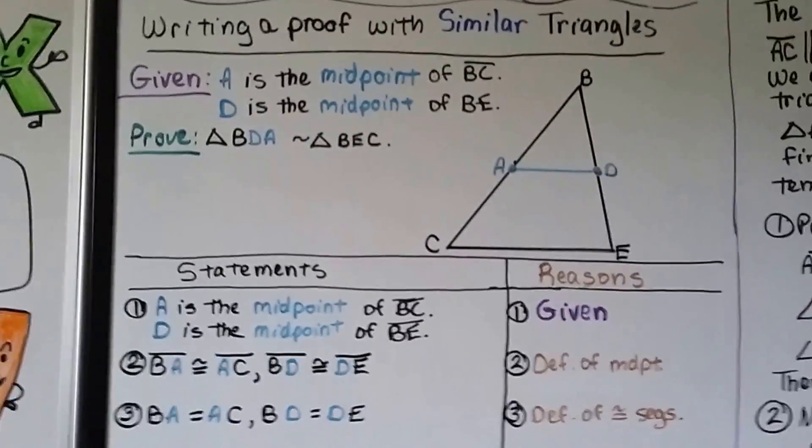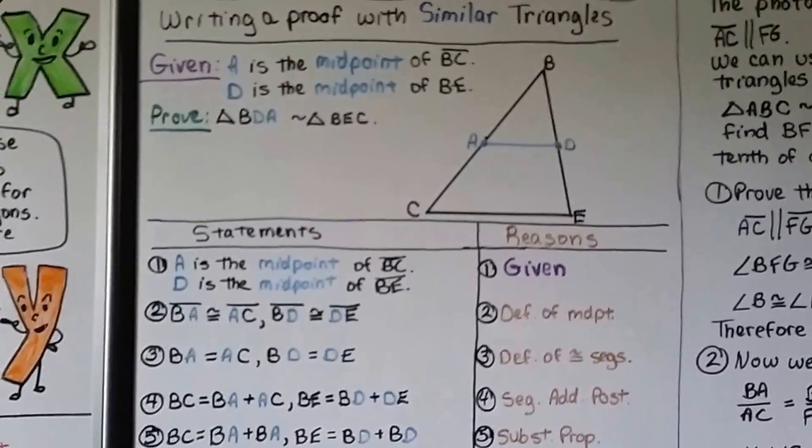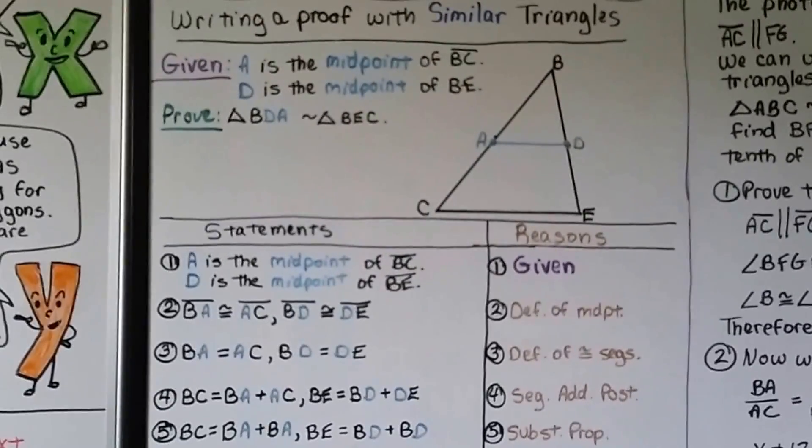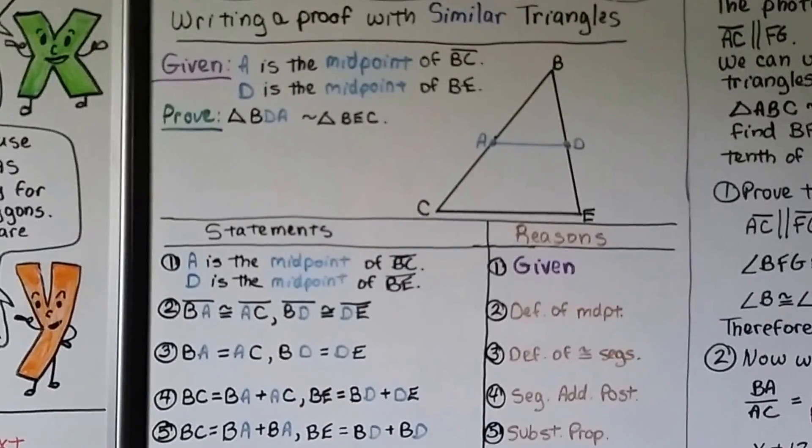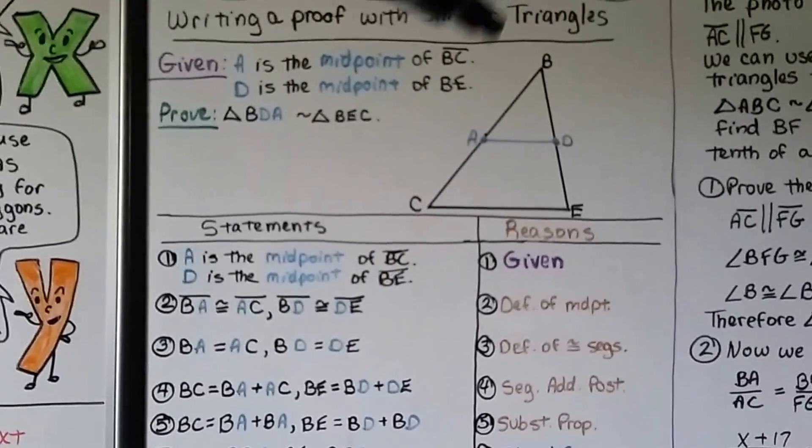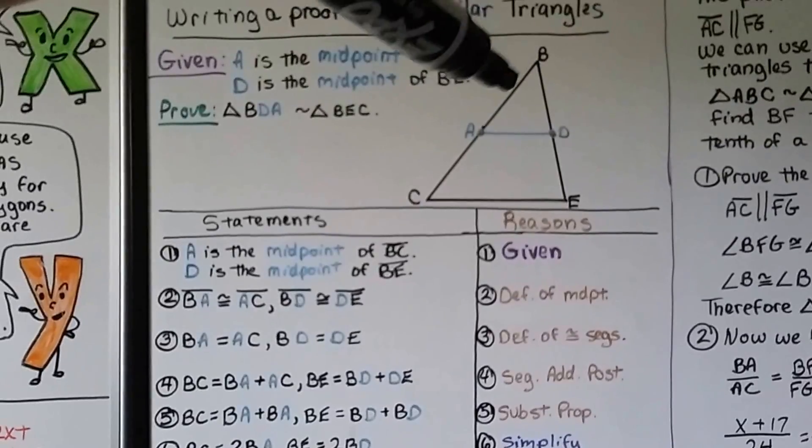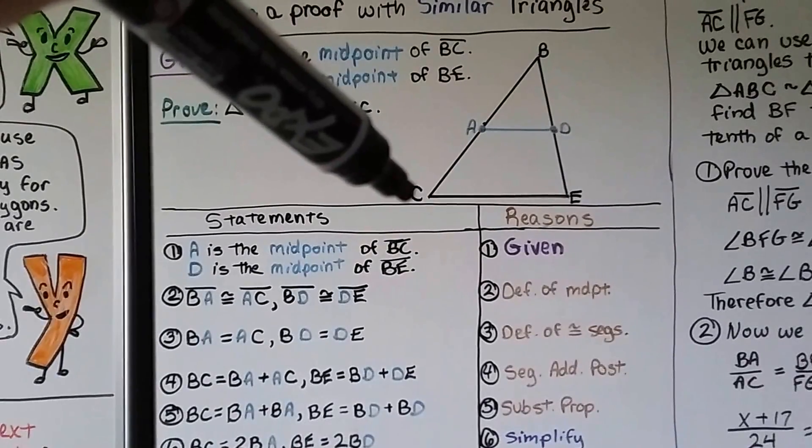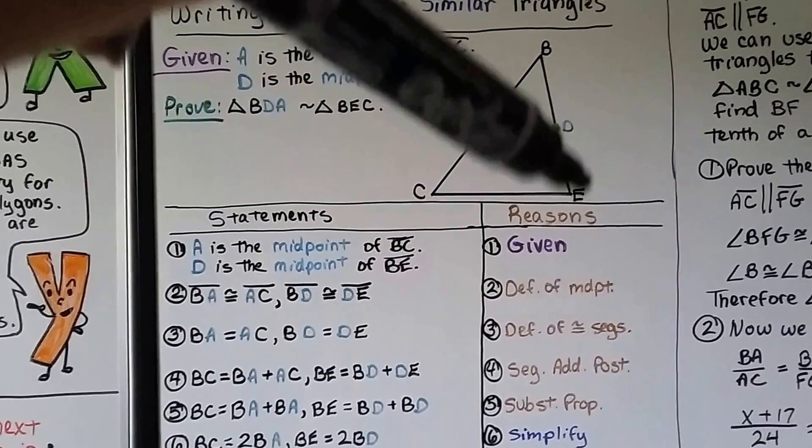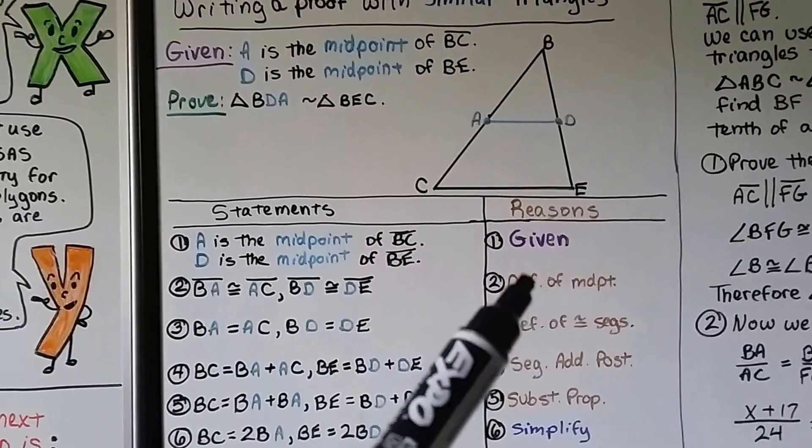So here's our two-column proof. We've got our given as number one, that A is the midpoint of BC and D is the midpoint of BE. Number two, we say that BA here is congruent to AC, and BD is congruent to DE, because that's the definition of a midpoint.